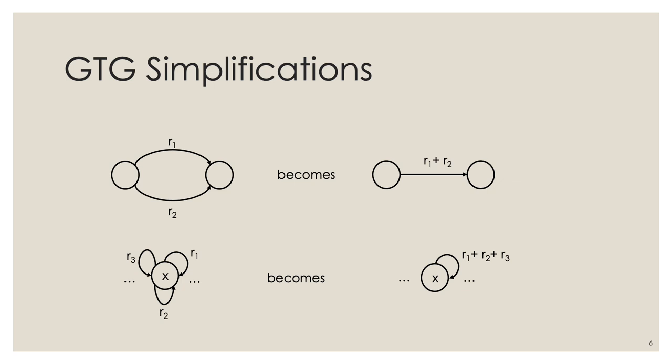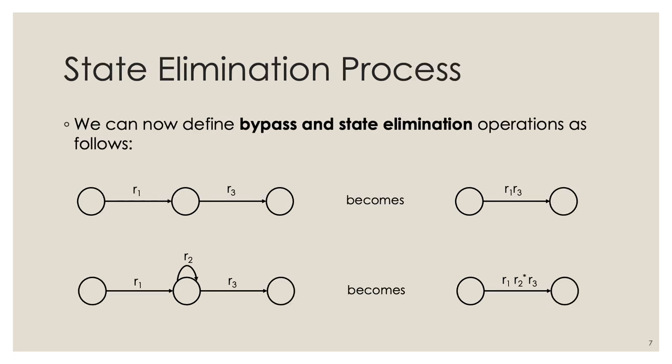If you have two states related by two edges in parallel, each with regular expressions r1 and r2 respectively, you can aggregate them into just one edge using the union r1 or r2. Likewise, if one state has three different loops, you can aggregate them into just one loop with the union of the three regular expressions.